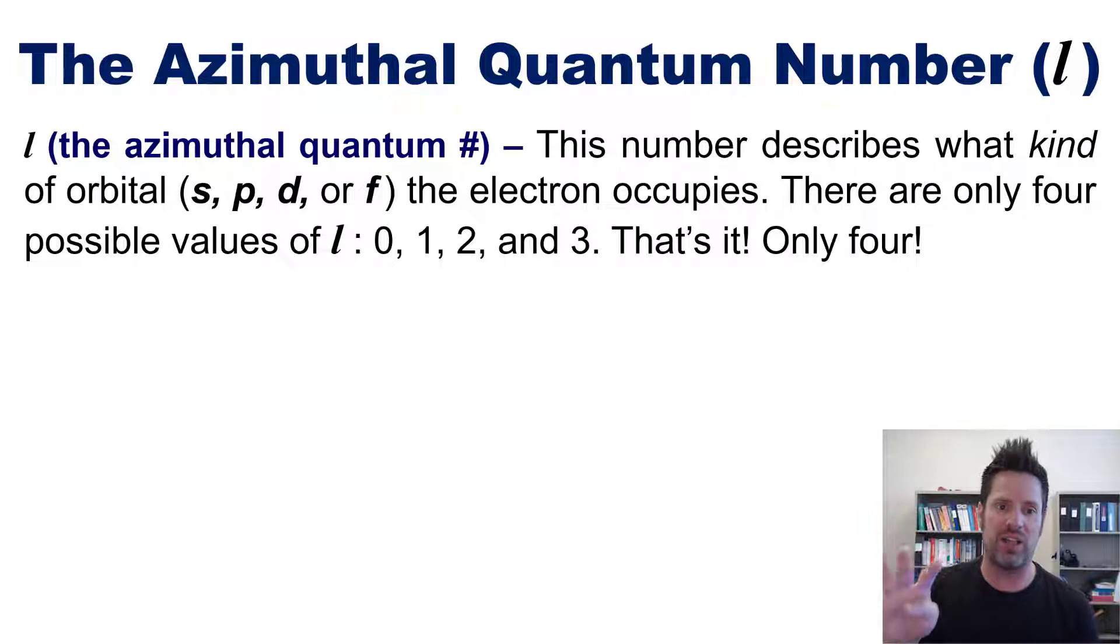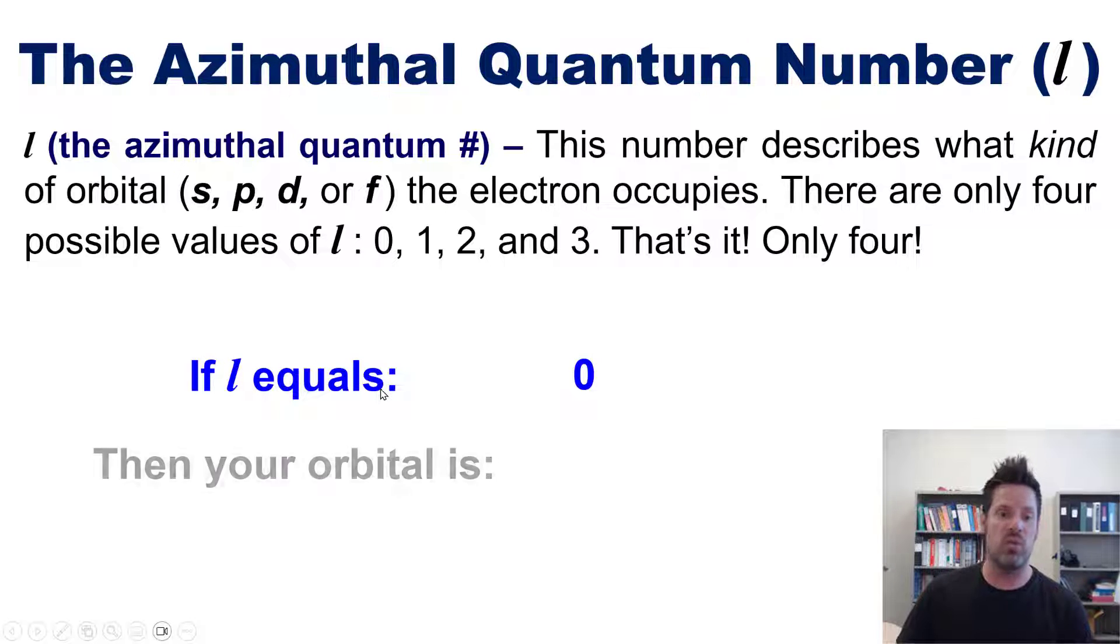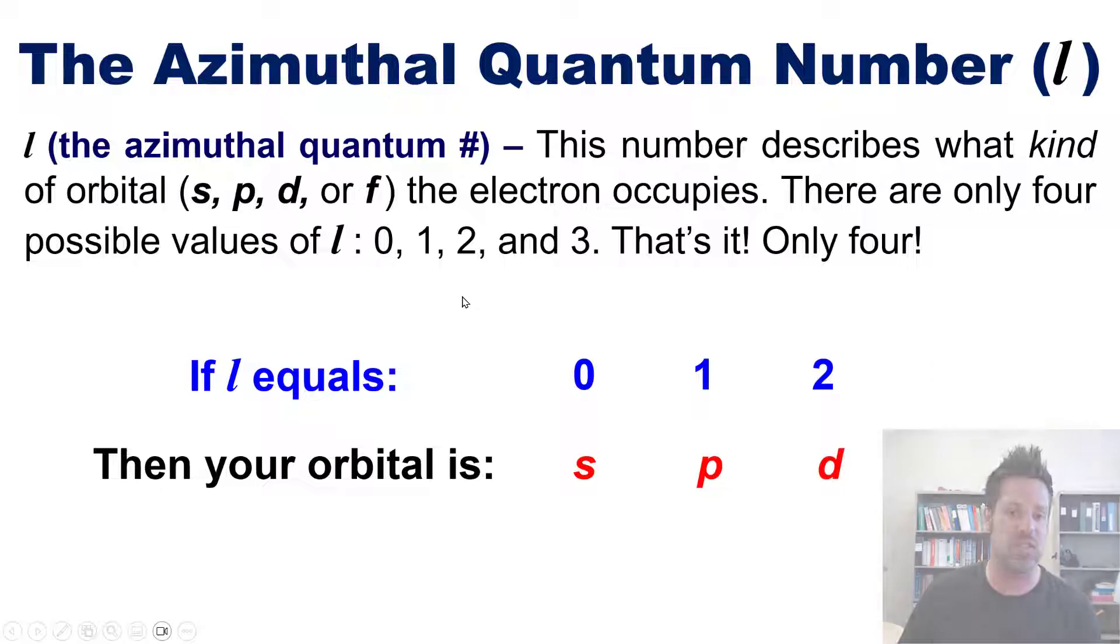There are only four possible values of l: 0, 1, 2, and 3. If l equals 0, then you're talking about an S orbital. If l equals 1, then you're talking about a P orbital. If it's 2, you're talking about a D orbital. And if it's 3, then you're talking about an F orbital. That's it. The only possible values of l.